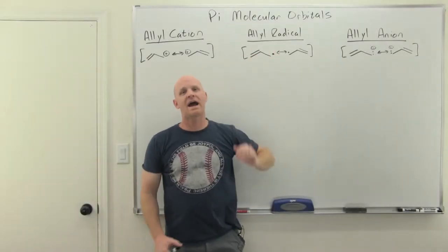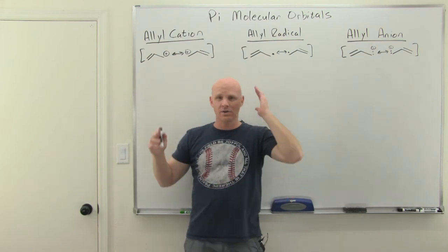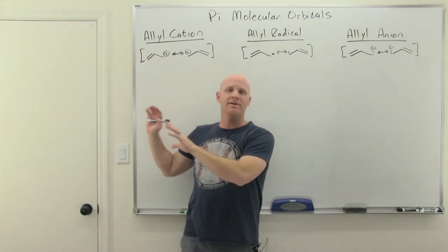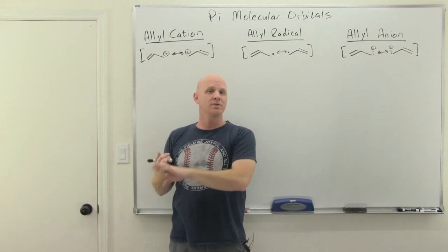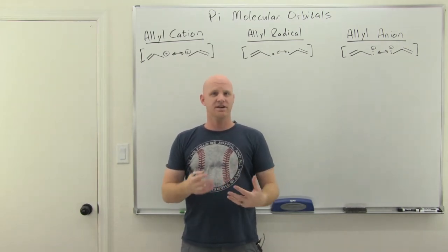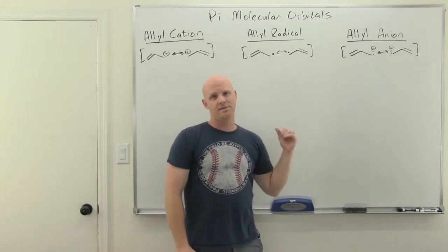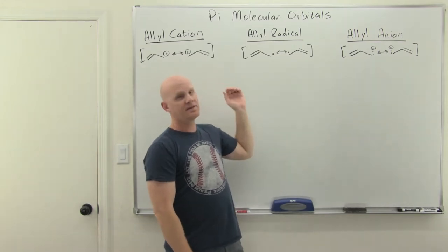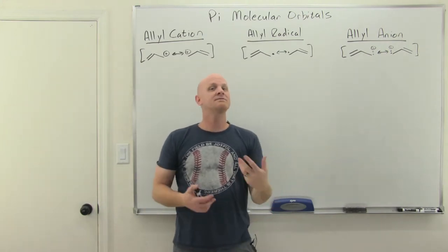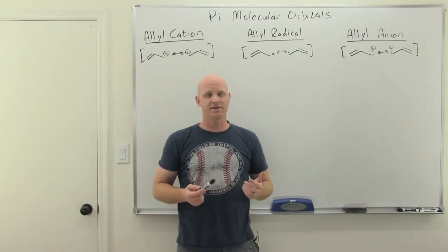The pi molecular orbitals of the allyl system — this includes the allyl cation, the allyl radical, and the allyl anion. In the last lesson, we looked at the pi molecular orbitals for both ethylene and 1,3-butadiene and got introduced to conjugated systems. Here we'll see one that's unique: it has only three atoms. Regardless of whether you have the cation, radical, or anion, the diagrams will be very similar — the only difference is how many electrons are in the conjugated system.